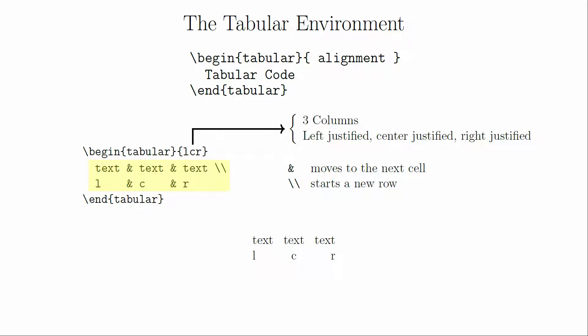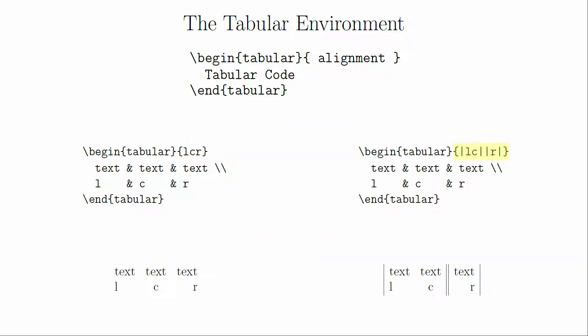From here, we can start to get fancier with the table. If we wanted to add vertical lines to separate the columns, we would put vertical bars into the alignment definition. We can also get double lines by putting two vertical bars between the columns. The vertical bars will only be drawn if you have cells that require them. If you end a row early without creating blank cells, the vertical lines will have gaps in them.